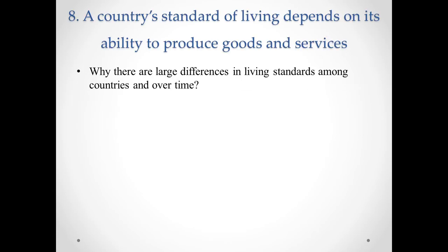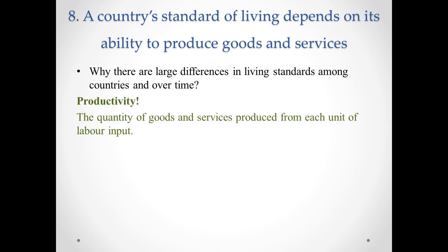The eighth principle is: a country's standard of living depends on its ability to produce goods and services. There are large differences in living standards around the world. Almost all variation in living standards is attributable to differences in countries' productivity. Productivity is the amount of goods and services produced from each unit of labor. In nations where workers can produce a larger quantity of goods and services per unit of time, most people enjoy a high standard of living.